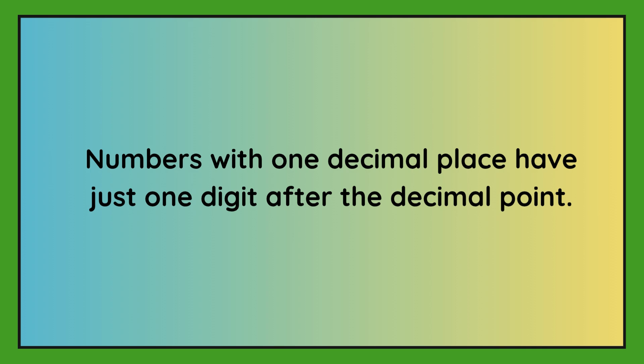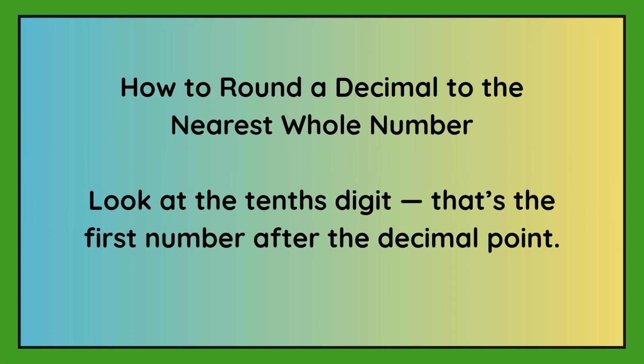Numbers with one decimal place have just one digit after the decimal point. How to round a decimal to the nearest whole number? Look at the tenths digit. That's the first number after the decimal point.